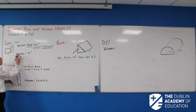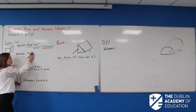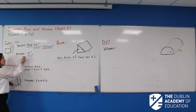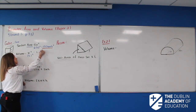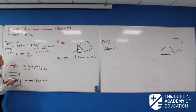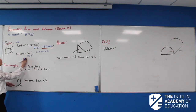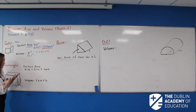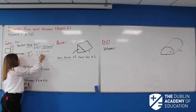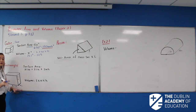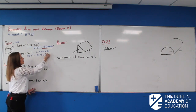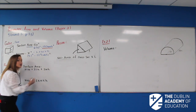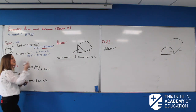Now onto our volume. The formula for volume of a cube is x cubed, x being the length of the side — which is the same as length times width times height. Filling it in: 5 cubed gives me 125. I don't have units mentioned, so it's units cubed. For volume we need to be very cautious — it's always units cubed.